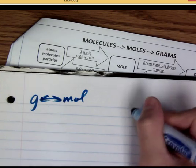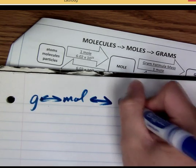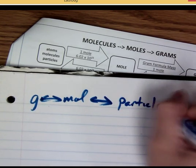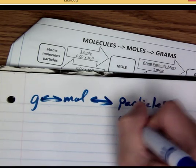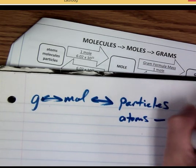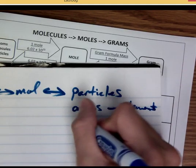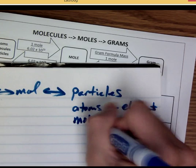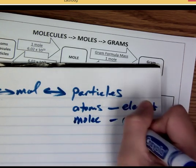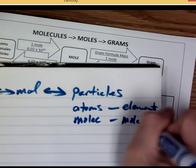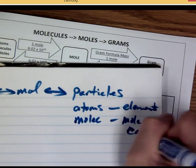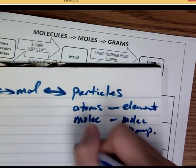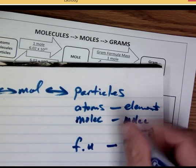And from mole, you can also go to particles, which is atoms for elements, remember? Atoms for single elements. And then molecules for molecular compounds. And then formula units for ionic compounds.